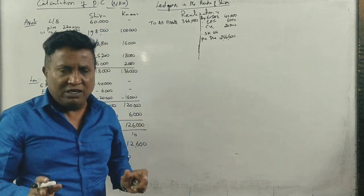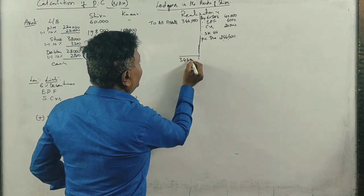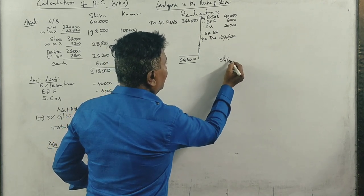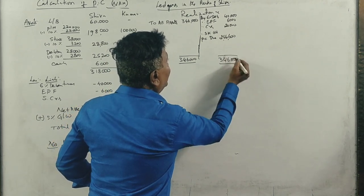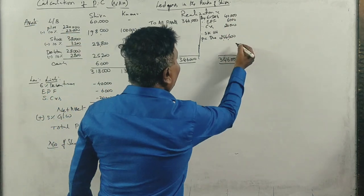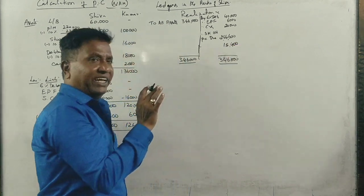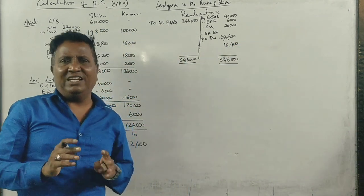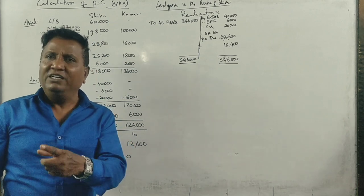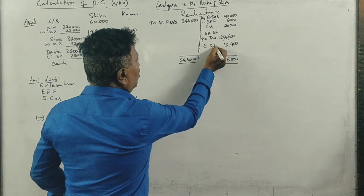Where is the loss? Realization account. Our total is 3,46,000. Loss is 15,400. This is the profit and loss. Who bears it? Equity shareholders. This is the equity shareholders account. Balancing figure.